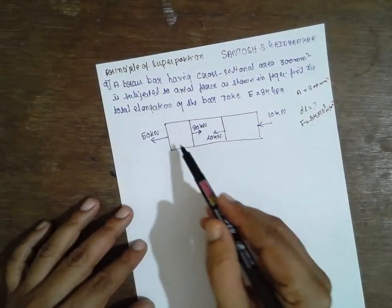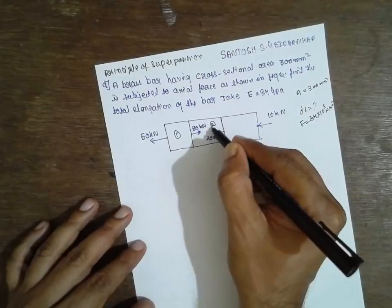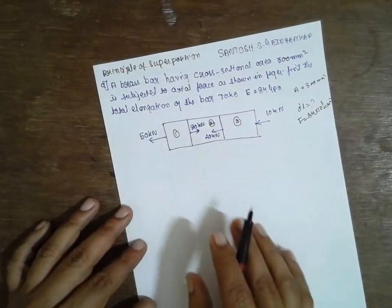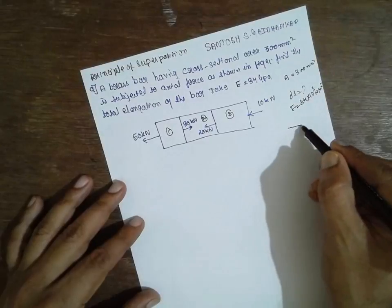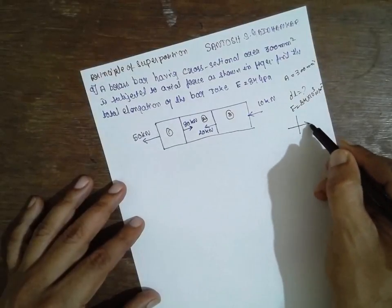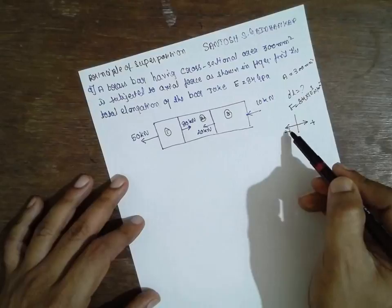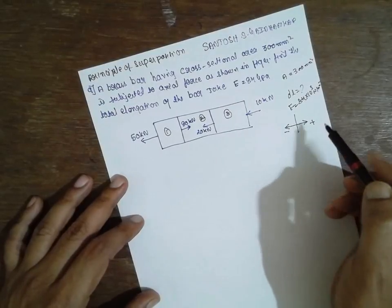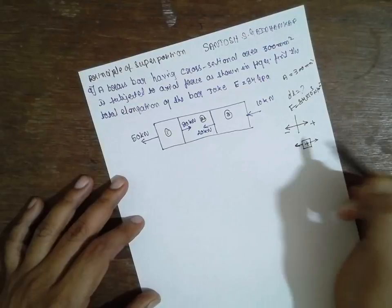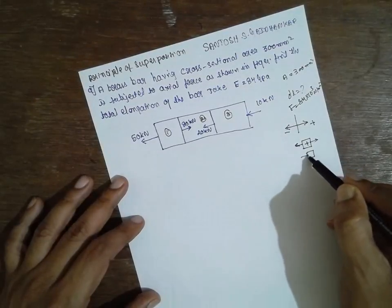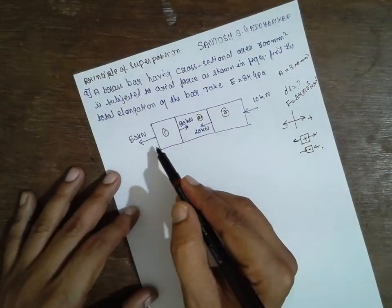I will consider everything in terms of sections — this is section 1, this is section 2, and this is section 3. I will check the equilibrium condition. I will consider the right side as positive and the left side as negative. If the arrow indicates the left side, I write it as negative; if the arrow indicates the right side, I write it as positive. If arrows point outward, it is tensile (positive); if inward, it is compressive (negative).